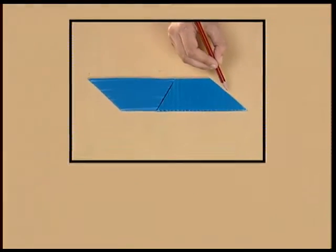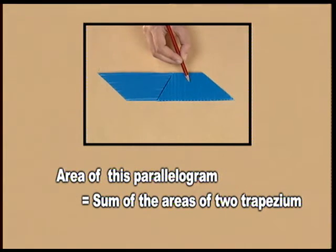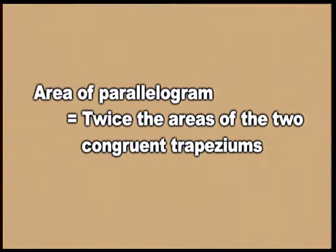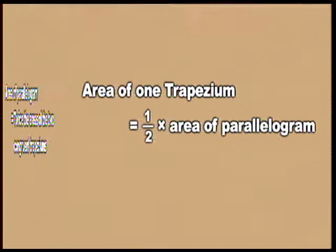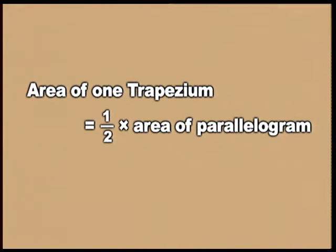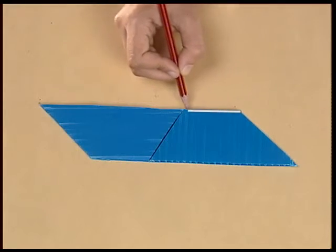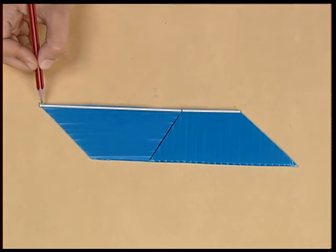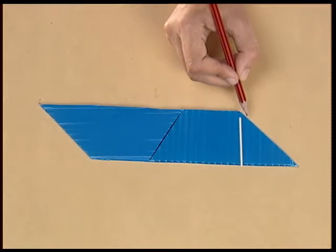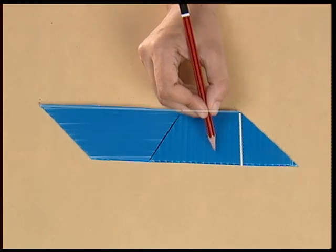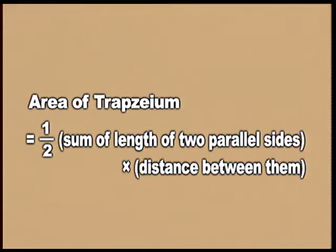So we can infer that the area of this parallelogram is equal to the area of the two trapeziums. Thus the area of one trapezium is half the area of the parallelogram. The base of the parallelogram equals the sum of both the parallel sides of the trapezium, and the height of the parallelogram is the distance between the two parallel sides. So the area of the trapezium is equal to half the sum of the two parallel sides into the distance between them.